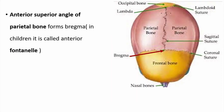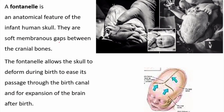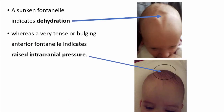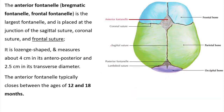The angles of the parietal bone: the anterior superior angle is also known as the bregma. In children it is also called the anterior fontanelle. A fontanelle is an anatomical feature of the infant human skull — soft membranous gaps between the cranial bones. Fontanelles allow the skull to deform during birth and allow for expansion of the brain after birth. A sunken fontanelle indicates dehydration; a bulging fontanelle indicates raised intracranial pressure. The anterior fontanelle is situated between the frontal suture, coronal suture, and sagittal suture. It is lozenge-shaped, with a diameter of 4 cm anteroposteriorly and 2.5 cm transversely, and it closes at 12 to 18 months.